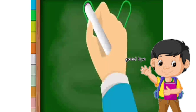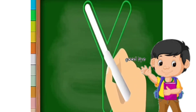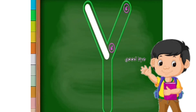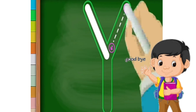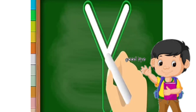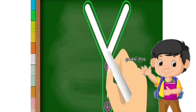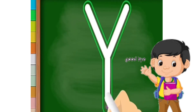Start from the top and make a slant down to the right till the middle. Go to the top again and now make a slanting line down to the left till the middle. From the meeting point of these lines, draw a standing line to the bottom.